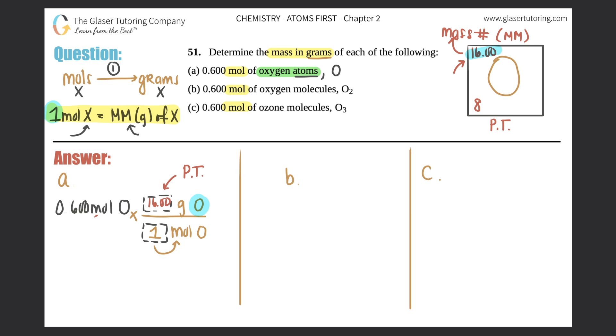We still need three sig figs because there are three here. If you're uncertain about sig figs, go back to chapter one—there are tons of problems there. So this would be 9.60 grams of O atoms, or just O. Box that answer—that's the answer to part a. Now we'll do the same thing for b and c.